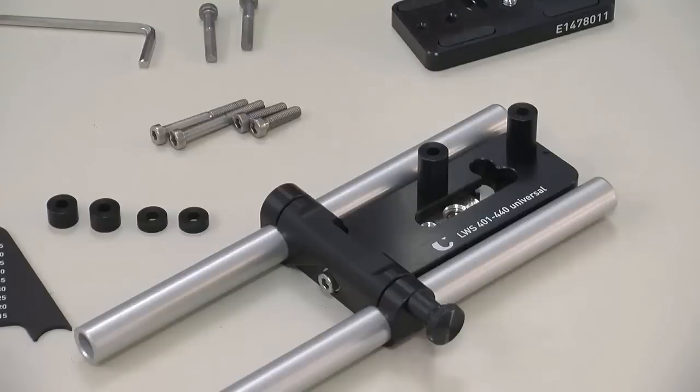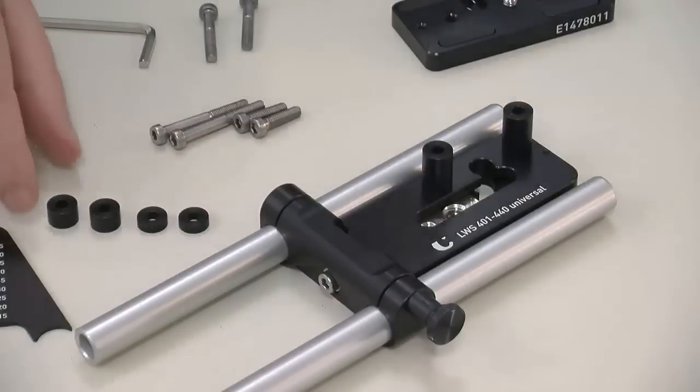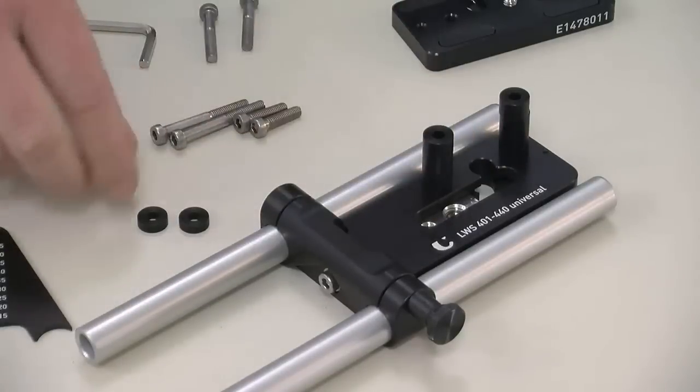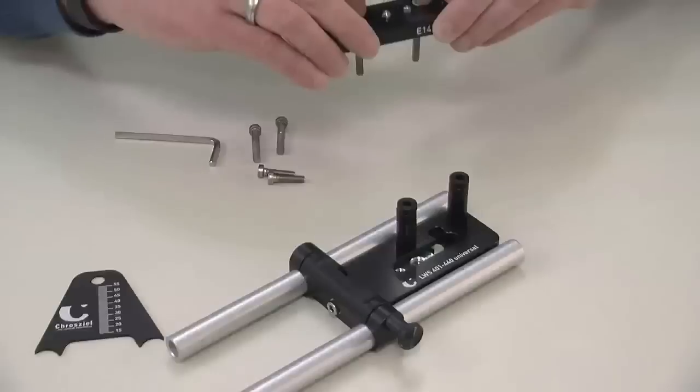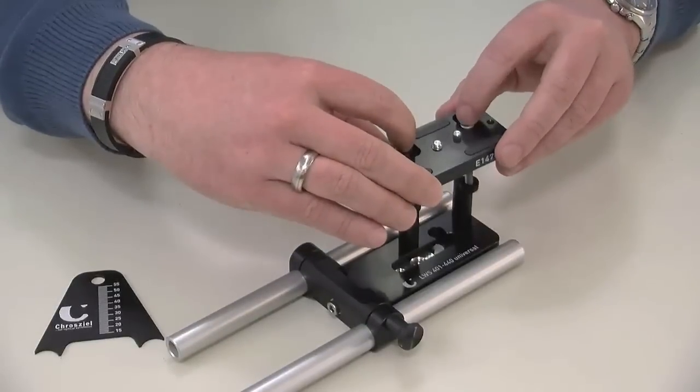We lift the base plate and place the extra spacers on top of the 16mm spacers. We put the base plate back on top, insert the screws and tighten them with an allen key.